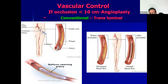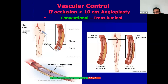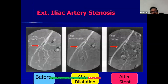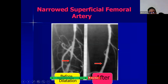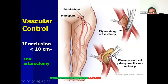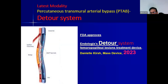In conventional transluminal angioplasty, a guidewire is passed through the femoral artery, negotiated through the blockage, and a balloon is inflated over it. If needed, a stent is placed — just like coronary angioplasty but for peripheral vessels. This shows a case of external iliac artery stenosis before and after dilatation, and after stenting. This shows a narrowed superficial femoral artery before and after dilatation. If occlusion is less than 10 centimeters, endarterectomy can also be done — the artery is opened and the plaque inside is removed.